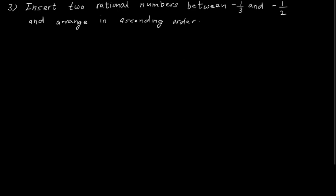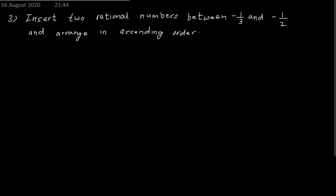Next question: find a rational number between minus 1 upon 3 and minus 1 upon 2, and arrange in ascending order. Here you do the same method, but keep in mind that a greater number with a negative sign is always smaller — for example, minus 10 is smaller than minus 5. You can try this third problem yourself; the only difference is that we have negative numbers instead of positive ones.